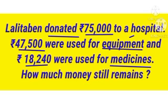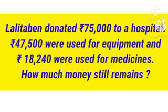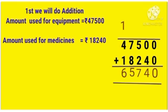So first we will do Addition, and after that Subtraction. Amount used for equipment is Rs. 47,500 and amount used for medicines is Rs. 18,240. Adding: 0 plus 0 is 0. 0 plus 4 is 4. 5 plus 2 is 7. 7 plus 8 is 15, write 5 carry 1. 4 plus 1 is 5, 5 plus 1 is 6. So your answer is 65,740.